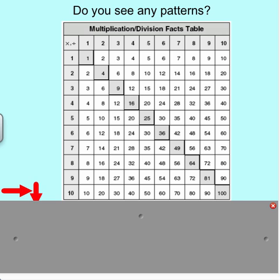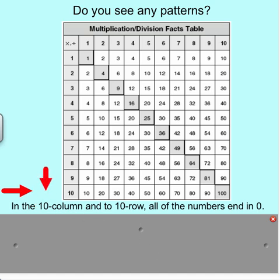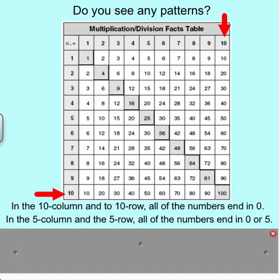Okay, let's talk about some of the patterns. In the 10 column and the 10 row — here's the 10 column, and a row goes across, so here's the 10 row — if we look down these columns and rows, we see all the numbers end in 0s. In the 5 column and the 5 row, all the numbers end in 0 or 5. Remember when we multiply by 5s, the numbers end in 0 or 5.